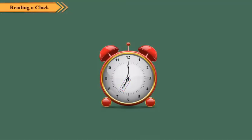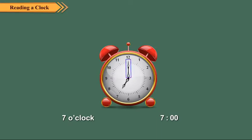Here, the hour hand is at 7 and the minute hand is at 12. So, the time is 7 o'clock. We can also write it as 7:00. When the minute hand is at 12, the time is the exact hour shown by the hour hand.